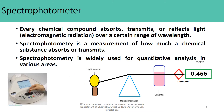Spectrophotometry is widely used for quantitative analysis in various areas. Every chemical compound absorbs, transmits, or reflects light over a certain range of wavelength. Spectrophotometry is a measurement of how much a chemical substance absorbs or transmits light.